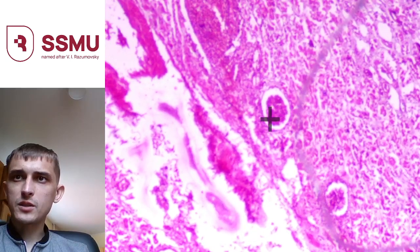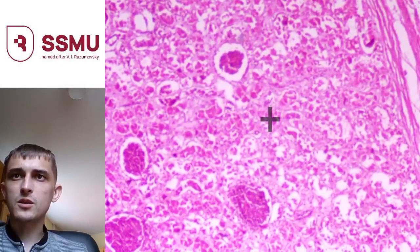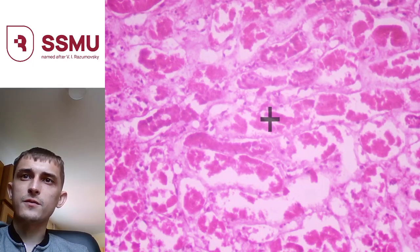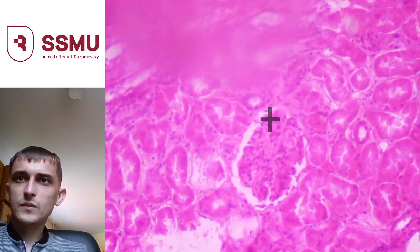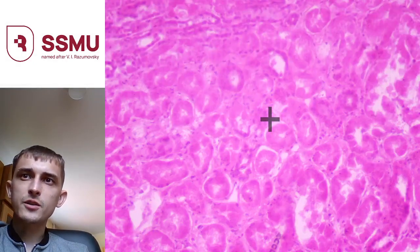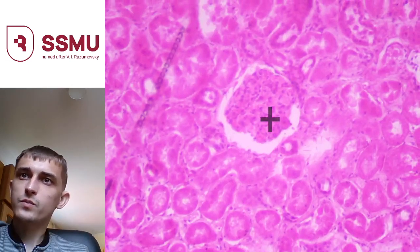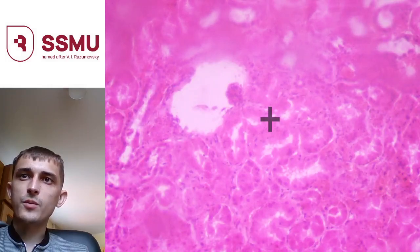One more slide — again we can see glomeruli here, here, and here. Pay attention to the convoluted tubes — there are no nuclei inside them, they are dead. Again the diagnosis is necrotic nephrosis. There are no nuclei inside the epithelium of the convoluted tubes. This is a tube and this is a glomerulus — please remember this on the exam, because sometimes the wrong structures are identified.